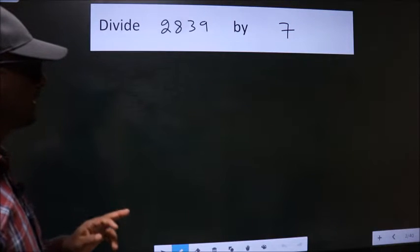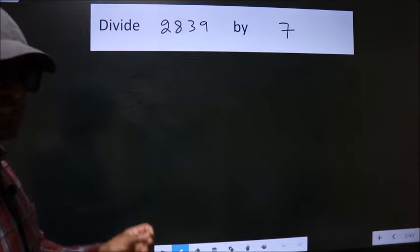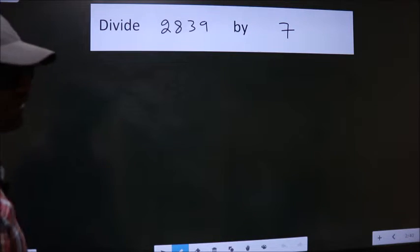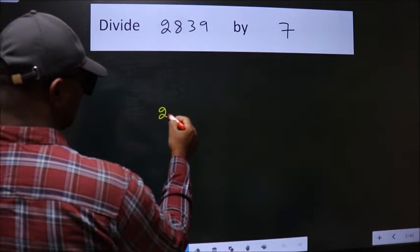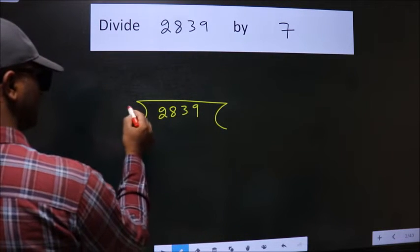Divide 2839 by 7. To do this division, we should frame it in this way: 2839 here, 7 here.